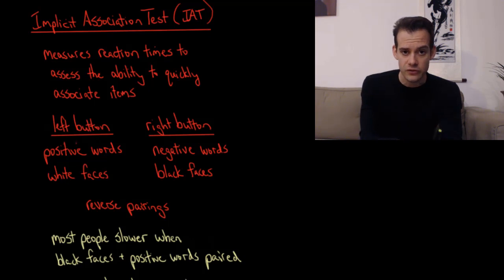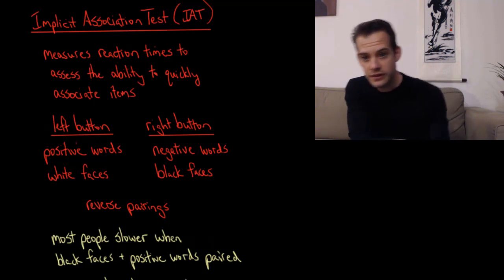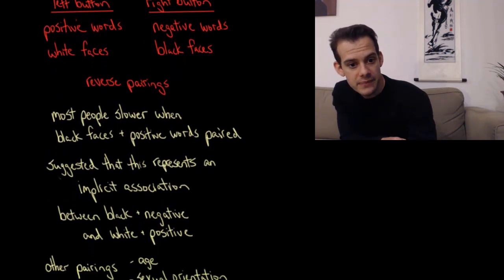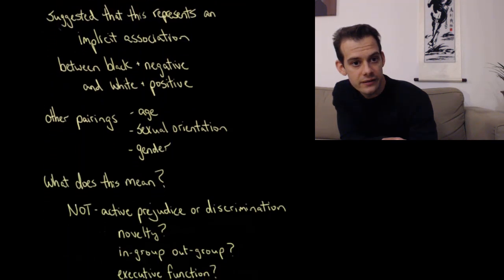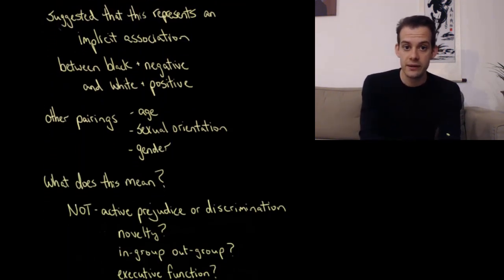And the idea is that if you associate certain things, like if you associate positive words with white faces, you'll be a little bit better, you'll be a little bit faster at that version, that association, rather than if white faces are being paired with negative words. And so what most people show is that they tend to be a little bit slower when pairing black faces and positive words. And this suggests that people might have an implicit association between black people and negative words, and between white people and positive words. And that's why they're a little bit faster at those types of pairings, and a little bit slower at the opposite pairings.